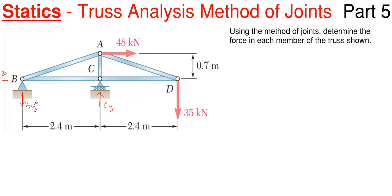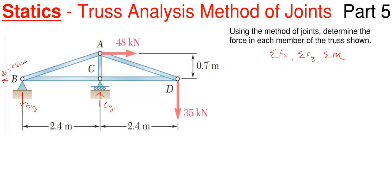I'm going to assume C sub Y is upward and B sub Y is downward. I don't need to utilize all three equilibrium equations to determine B sub X because if I look at the horizontal direction I just have 48 kilonewtons being applied at A. That 35 is a vertical force so it doesn't count. B sub X is automatically resisting that 48 kilonewtons to the right, so this has to be 48 kilonewtons to the left.